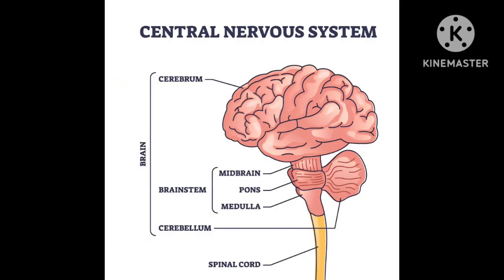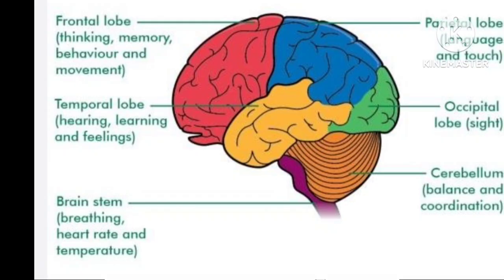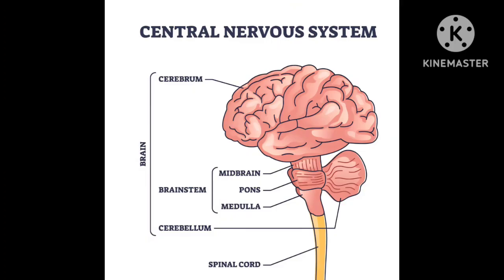The cerebellum is important for balance and coordination of the body. The third portion of the brain is called the brain stem, and it has three parts: midbrain, pons, and medulla oblongata. You can remember them with the mnemonic MPM. The medulla oblongata continues down as the spinal cord. There are respiratory centers and heart centers within the brain stem which control the heart and the lungs. The brain stem is also important in maintaining the temperature of the human body.